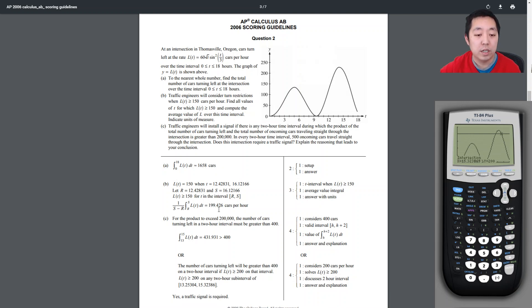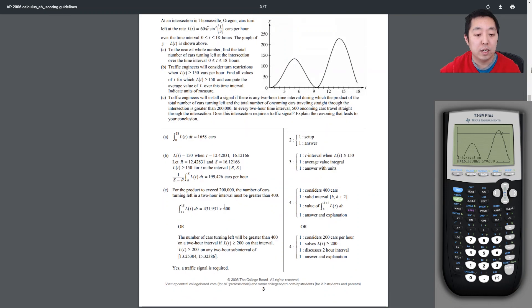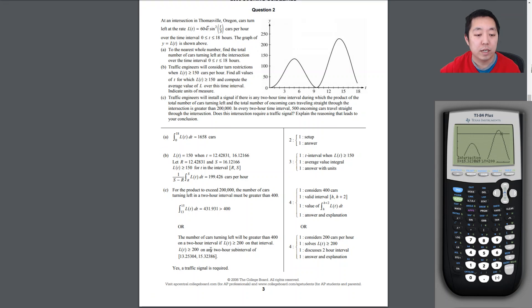1658 cars. 199.426 cars per hour. I thought they went to the nearest car, but that's fine. 199. Yeah, so we did this. The number of cars, if we're greater than 400 for a two-hour interval, if L(t) is greater than 200 in the interval is between that, so yes, the traffic signal is required.